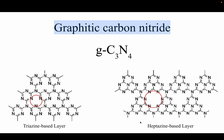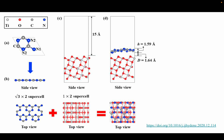Hello everyone, welcome again to this channel. Today I am going to make a supercell of graphitic carbon nitride, which is usually represented as g-C₃N₄. It has two different types of layers: one is the triazine-based layer and another is the heptazine-based layer. We will mainly take the triazine-based layer and construct a unit cell of hexagonal type, then rectangularize it by constructing a root-3 × 2 supercell. I will be following this paper.